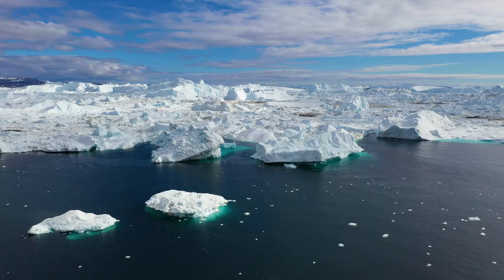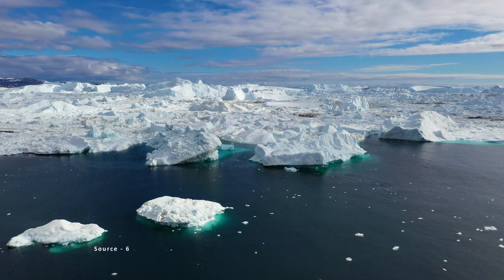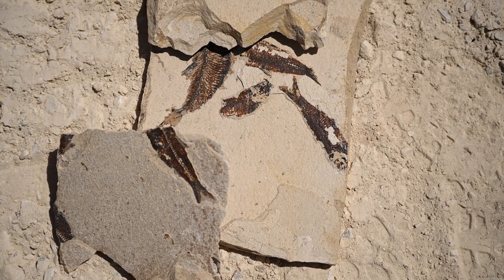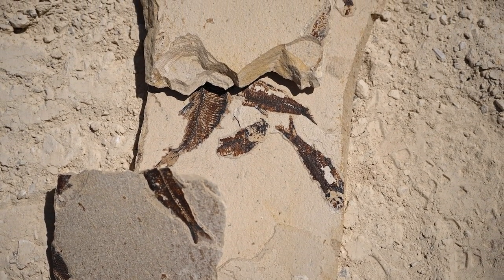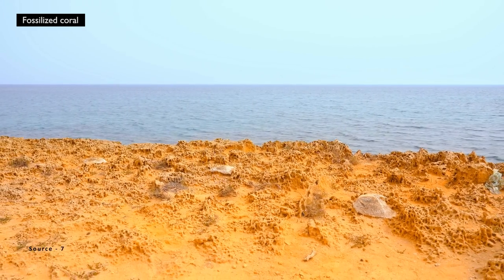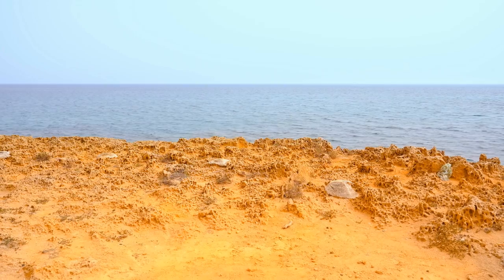During this thermal maximum, the North Pole temperatures reached a maximum of 27 degrees Celsius and a minimum of 10 degrees Celsius. 5 degrees of temperature rise is a lot, and at the time, according to isotope readings, it took the Earth about 150,000 years to recover.